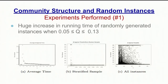This is a graph of the results. As you can see, in both the average and the stratified examples, there is an enormous peak range for Q. The graph showing all instances actually shows a double peak, separated by whether the formula was satisfiable or unsatisfiable, which was quite interesting to us.